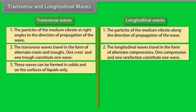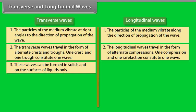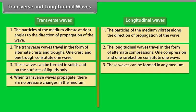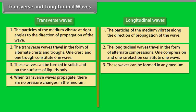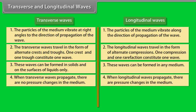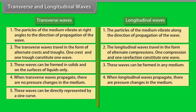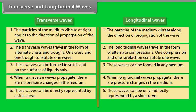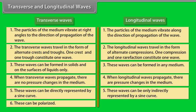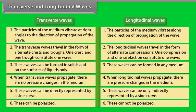Number 3: Transverse waves can be formed in solids and on the surface of liquids only, whereas longitudinal waves can be formed in any medium. Number 4: When transverse waves propagate, there are no pressure changes in the medium, but when longitudinal waves propagate, there are pressure changes in the medium. Number 5: Transverse waves can be directly represented by a sine curve, whereas longitudinal waves can only be indirectly represented by a sine curve. Number 6: Transverse waves can be polarized, whereas longitudinal waves cannot be polarized.